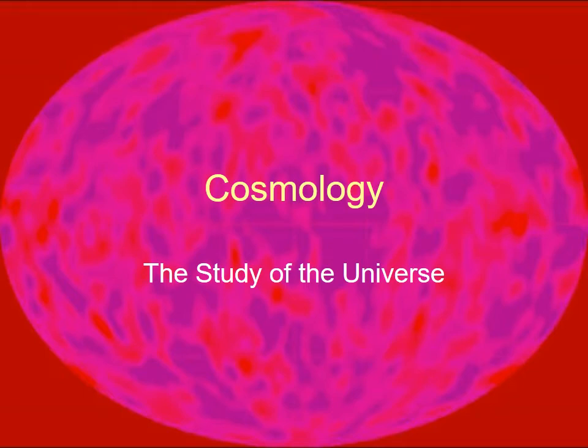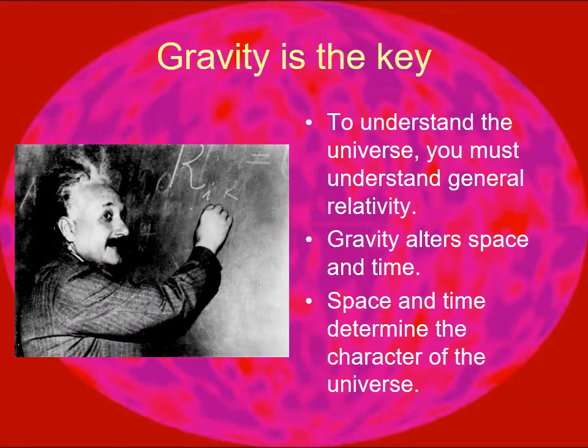For our second short lecture on cosmology, we want to look at gravity because gravity turns out to be the key. We talked about the basic ideas that Newton had and gravity, and his ideas that in order to be stable, the universe had to be infinitely large and infinitely old.